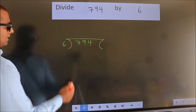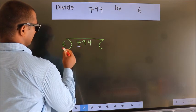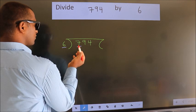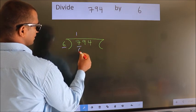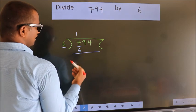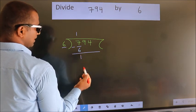Next. Here we have 7, here 6. A number close to 7 in the 6 table is 6 times 1 is 6. Now we should subtract. We get 1.